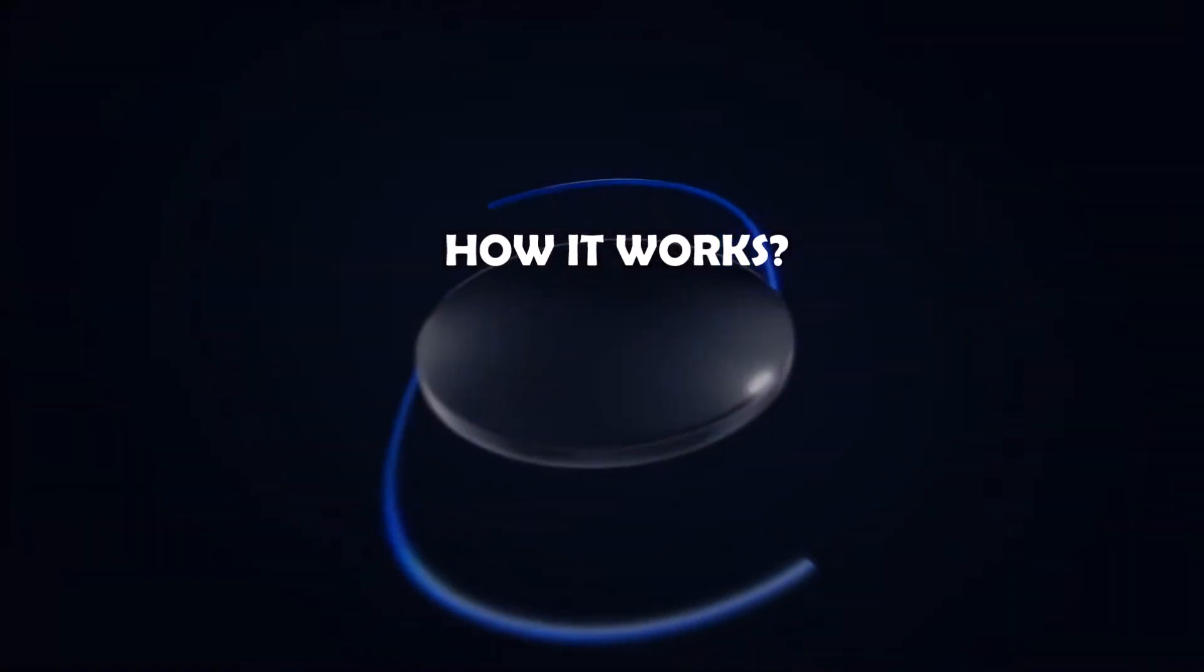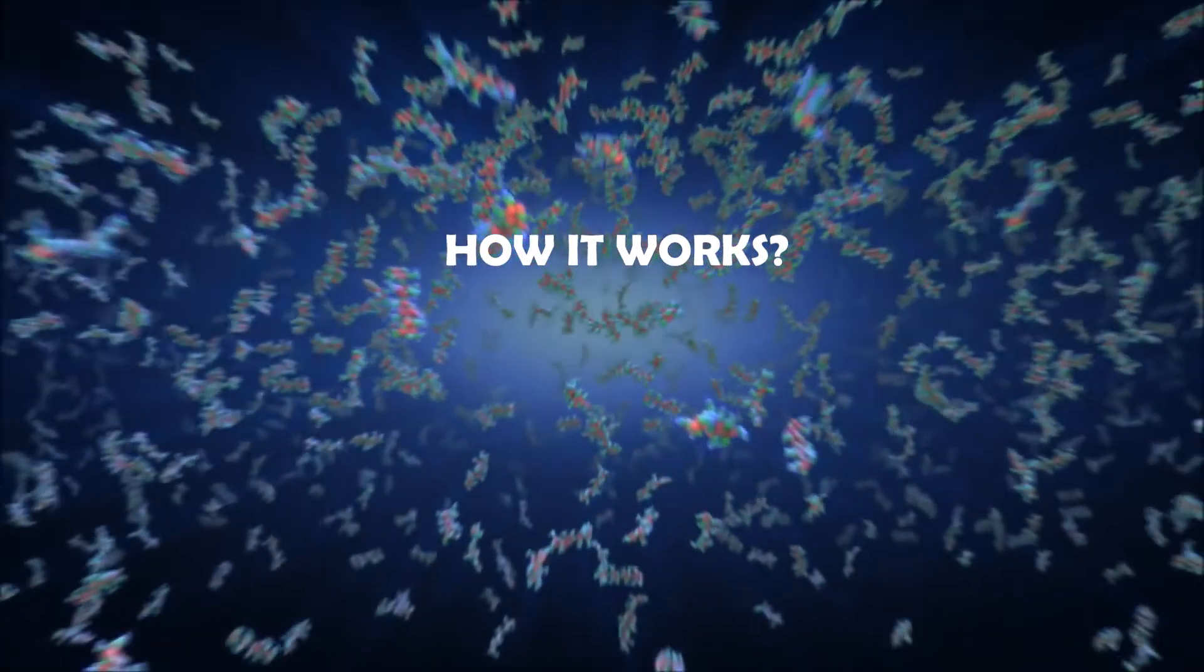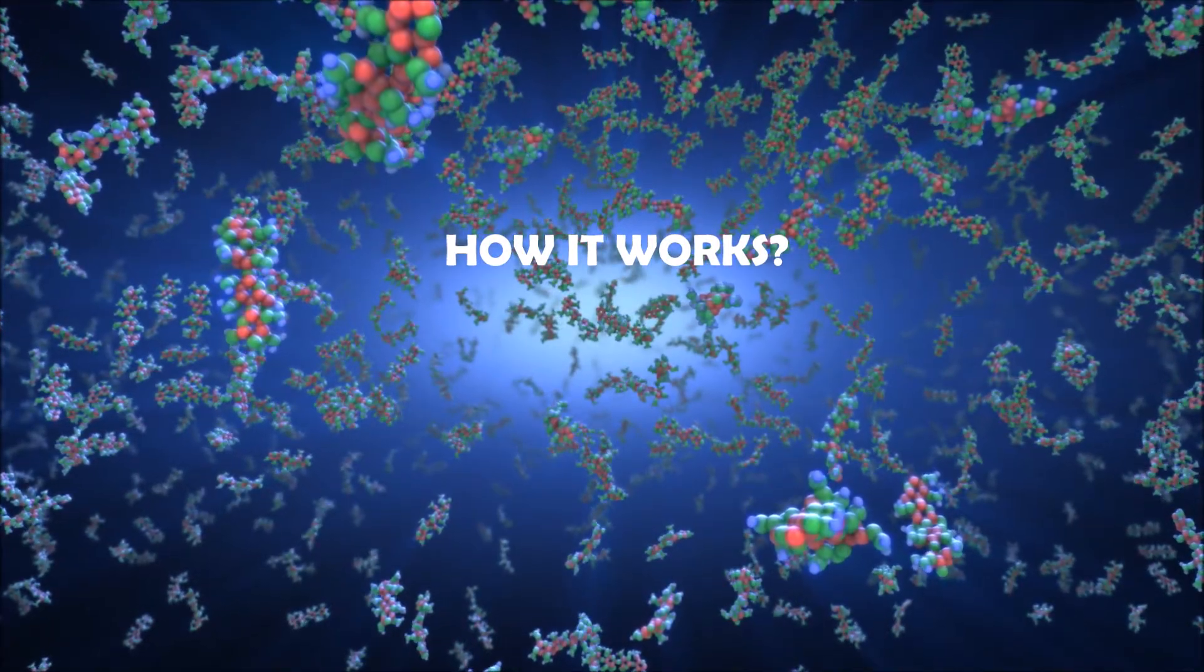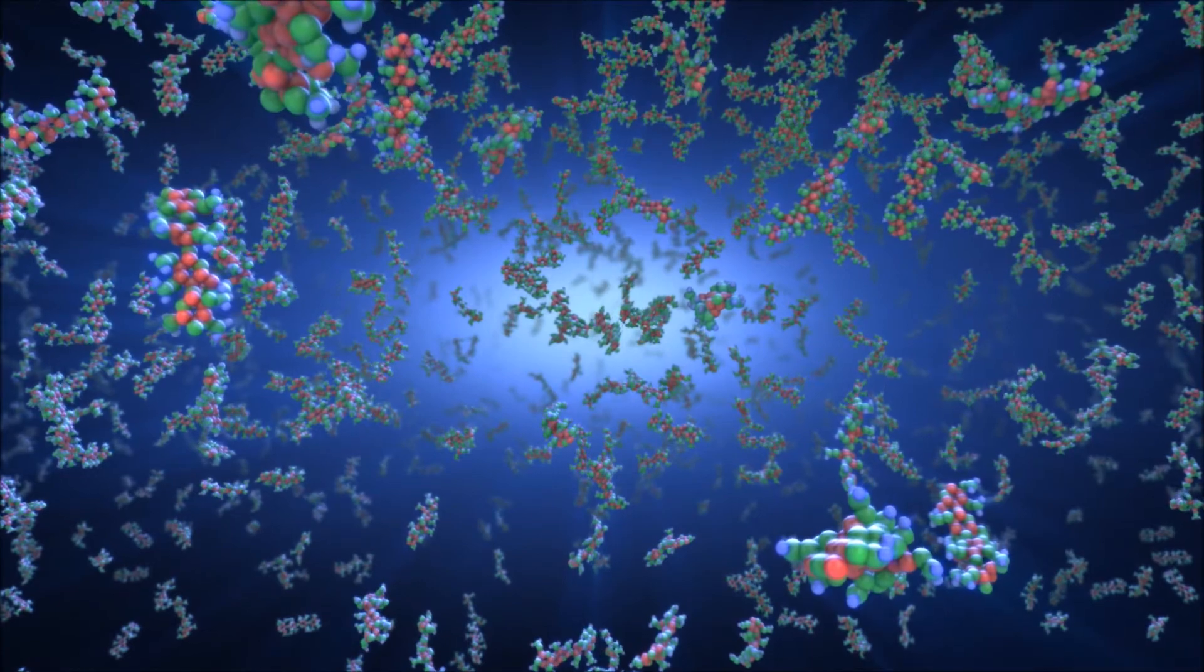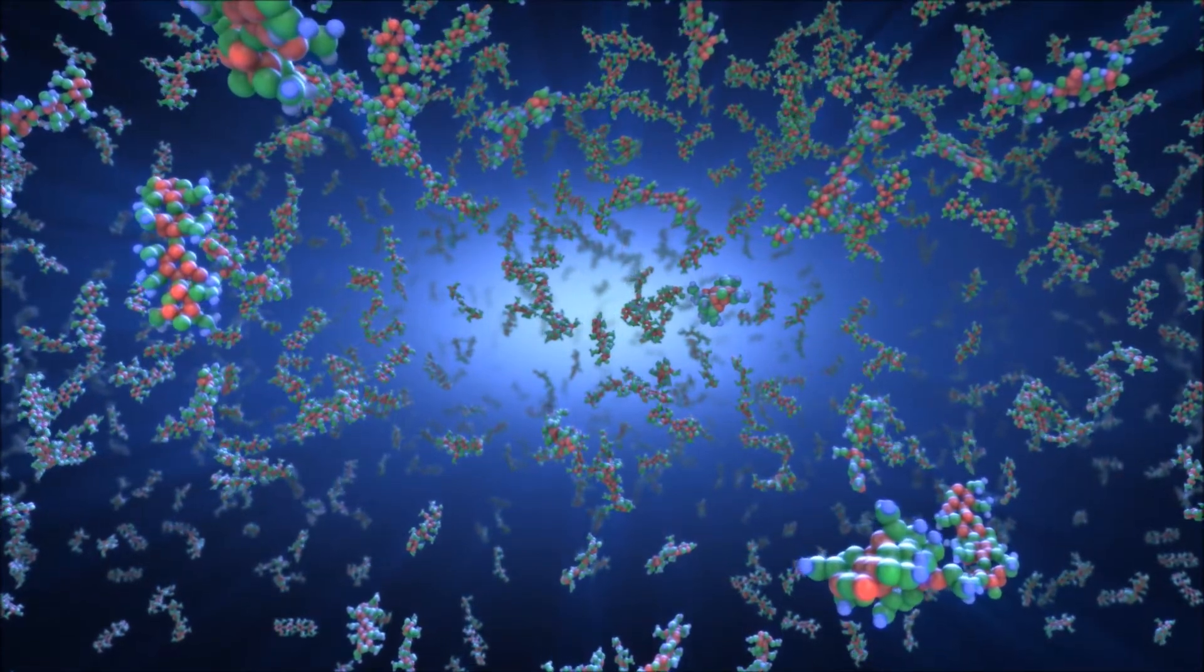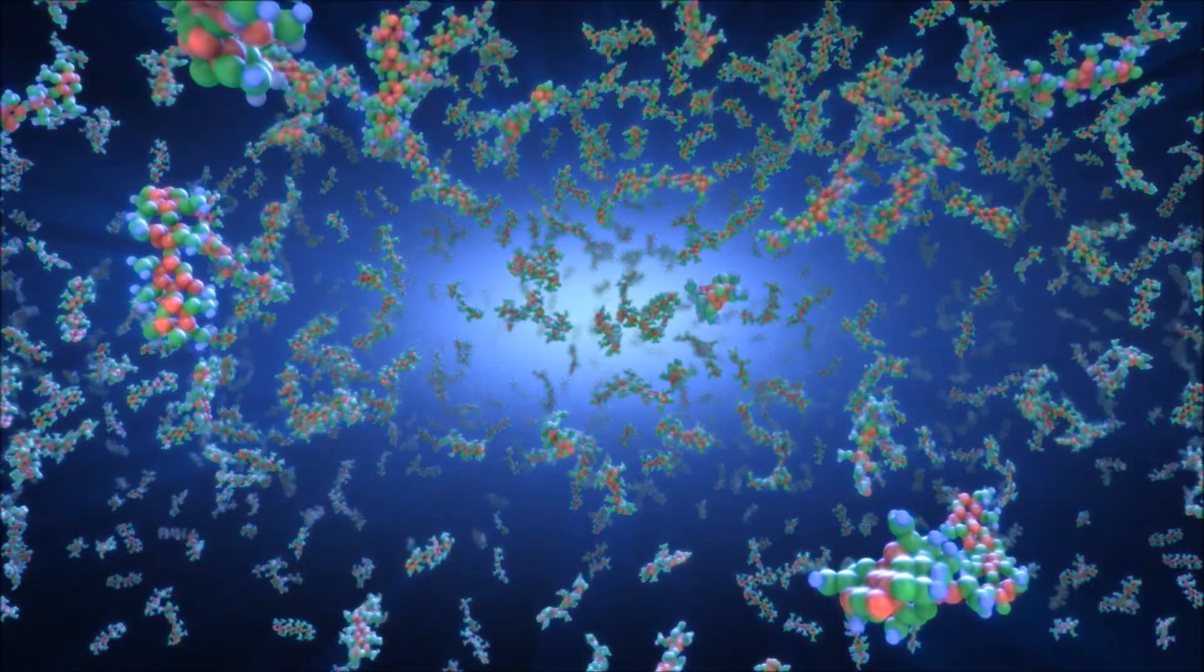Light adjustability of the lens is based on the principles of photochemistry and diffusion. RxSight's Light Adjustable Lens incorporates proprietary silicone photoreactive additives called macromers, which are distributed throughout the lens.